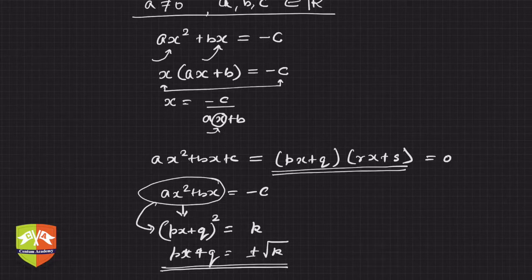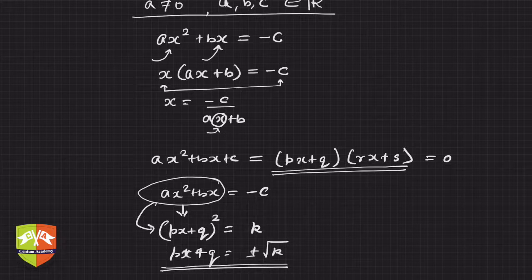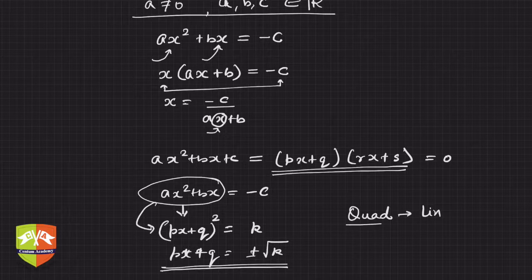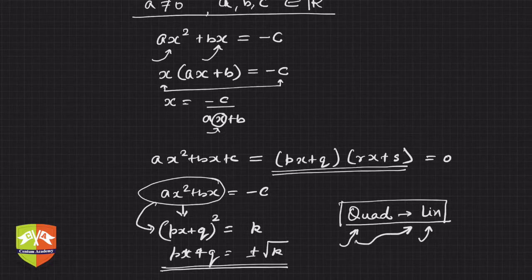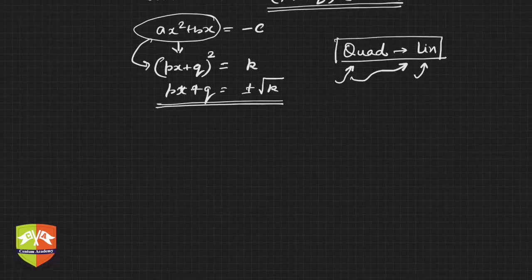The moment we have a square term, we can take the square root on both sides and reduce a quadratic to a linear equation. This is incremental learning — we learned how to solve linear equations previously, and now we are solving quadratic equations by converting them using the principles of solving linear equations.